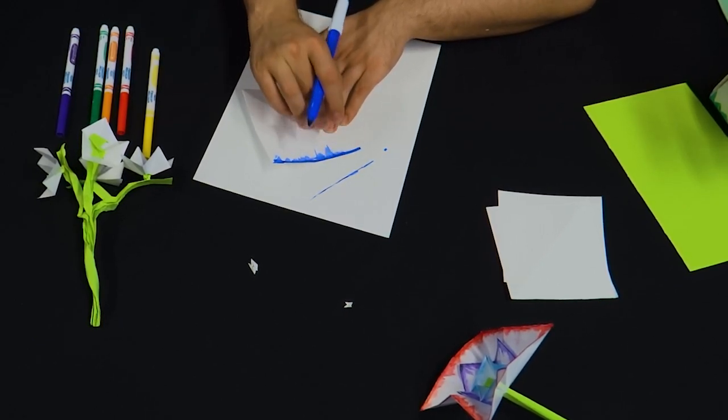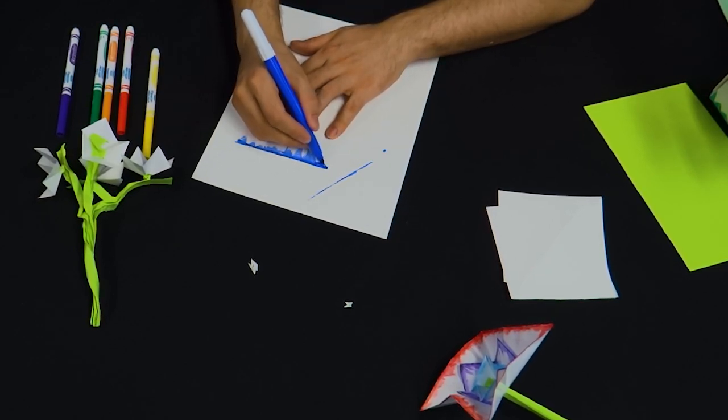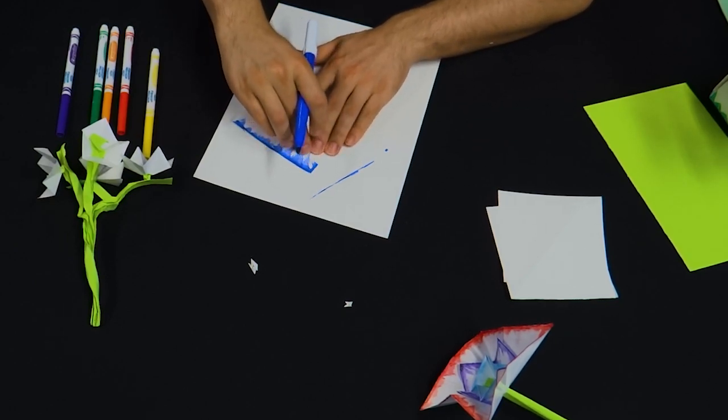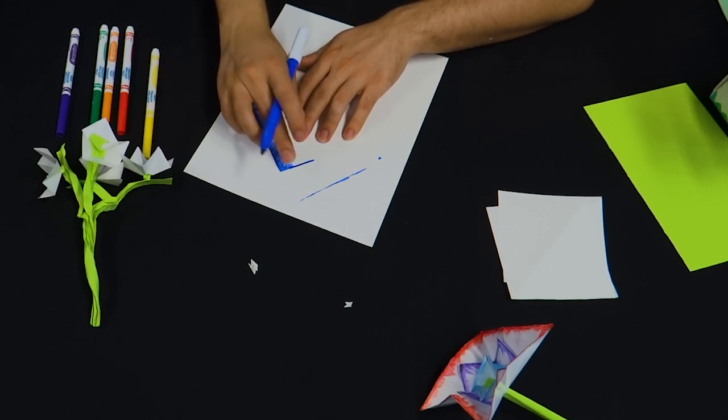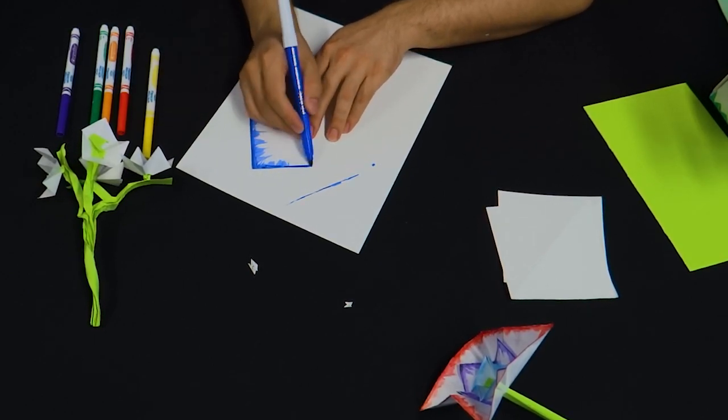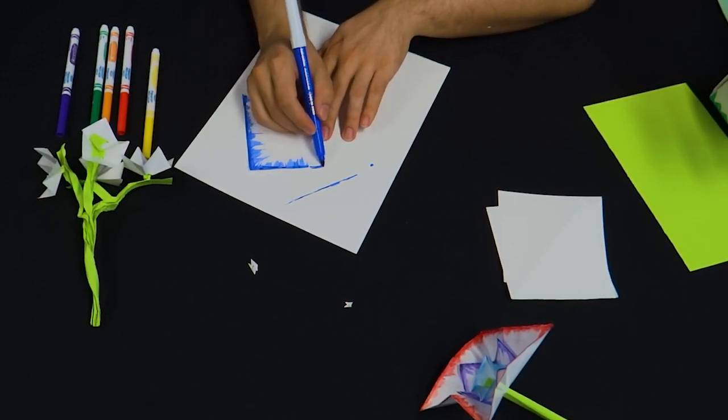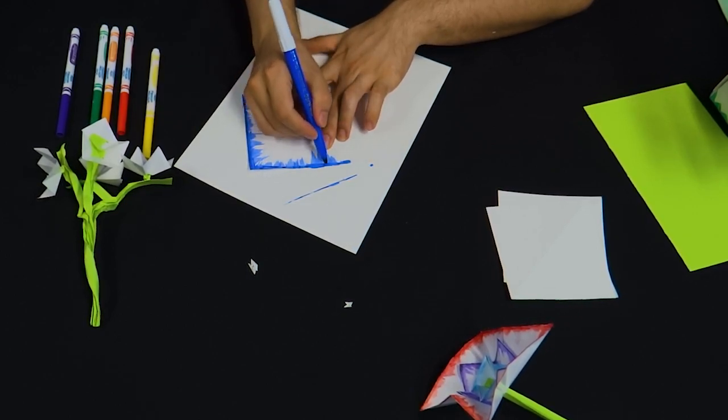The cool thing about this paper is that it's glossy, so the marker can sort of slide on it a little bit, giving this kind of a cool gradient effect. I just color it, and as soon as I color it, before the marker dries, I'm dragging it into the center. I think that's a really neat effect.